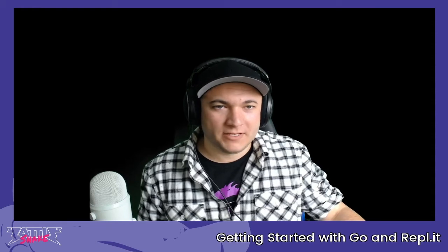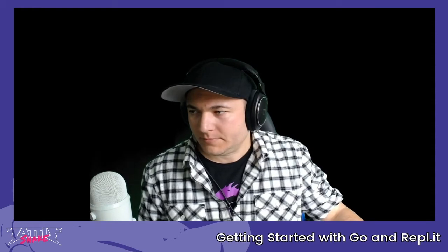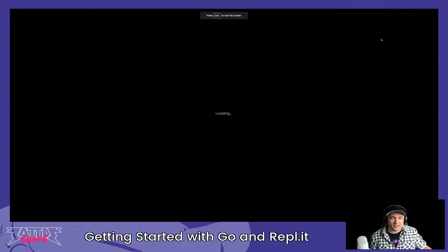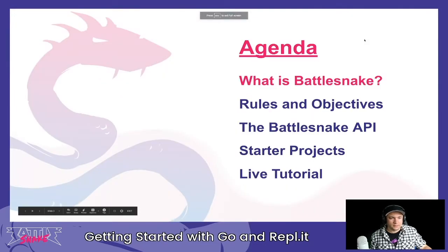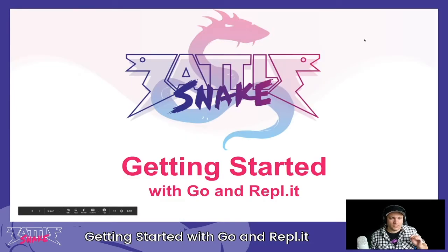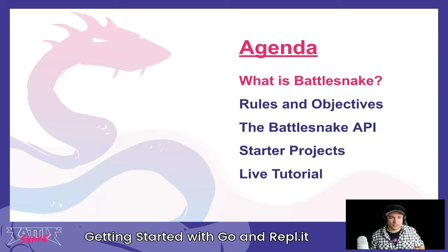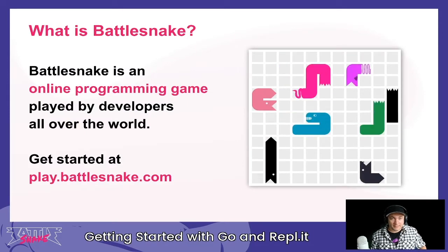Before we get into the coding, I have a couple of slides. We're watching the 'Get Started' tutorial with Go and Replit. Topics we'll cover: what BattleSnake is and the rules of the game, how the API works, the starter projects on GitHub, and then we'll actually try to code one of these things live and see how far we get.